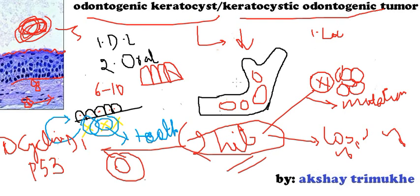So, we have covered the clinical features, genetics, and radiographic features of Odontogenic Keratocyst. We have also discussed how it develops from dental lamina and the oral epithelium. Now we are going to talk briefly about the treatment of Odontogenic Keratocyst.